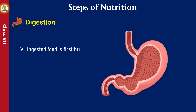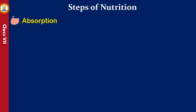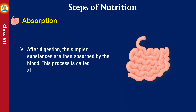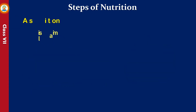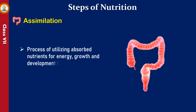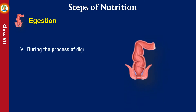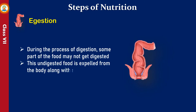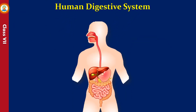The ingested food is first broken down into smaller and simpler compounds; this process is called digestion. After digestion, the simplest substances are absorbed by the blood; this process is called absorption. The absorbed nutrients are then transported to different parts of the body. The process of utilizing absorbed nutrients for energy, growth, and development is called assimilation. During digestion, some food may not get digested; this undigested food is expelled from the body along with some water in the form of feces through a process called egestion.